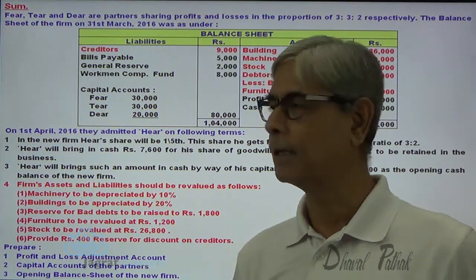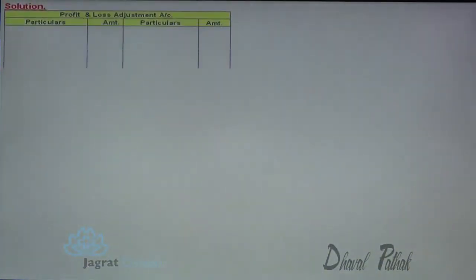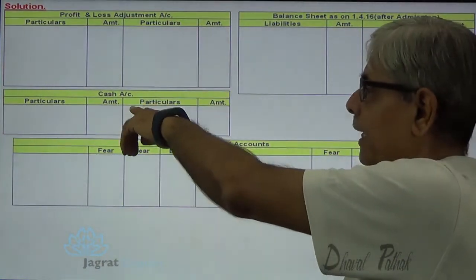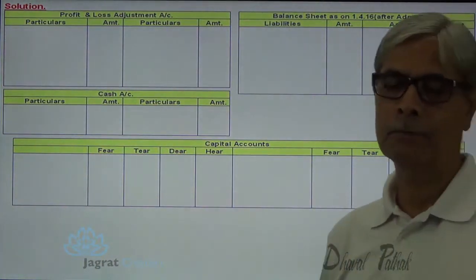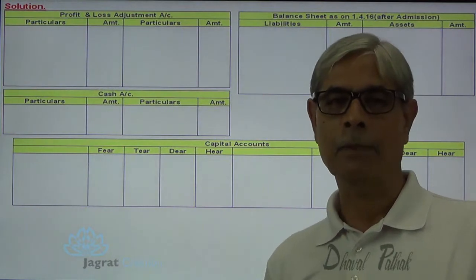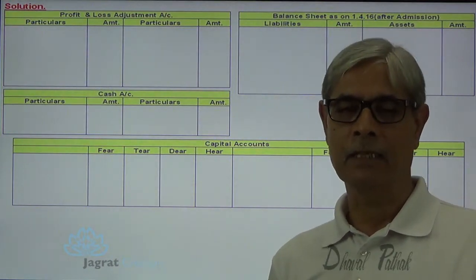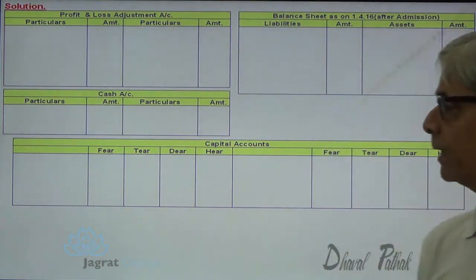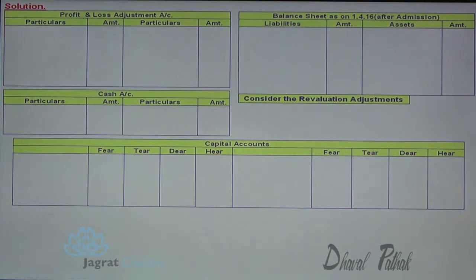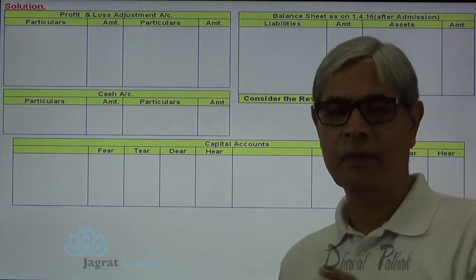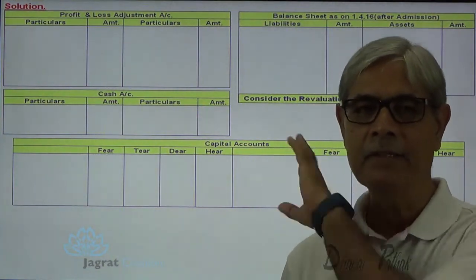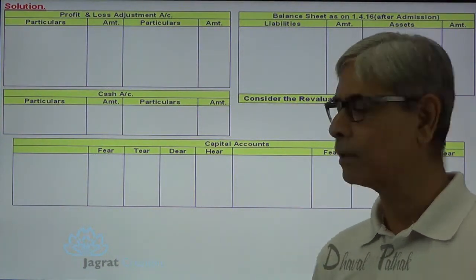Let me start with the sum. I am going to prepare the profit and loss adjustment account, cash account, partners' capital account, and the balance sheet after admission. The first step is to start with the revaluation adjustment, considering each adjustment one by one.